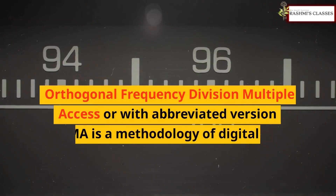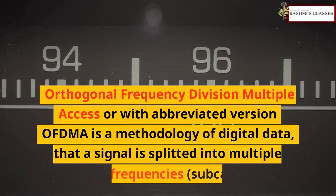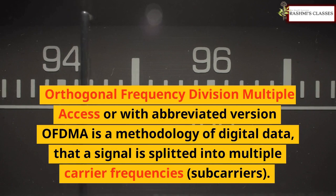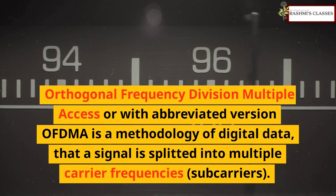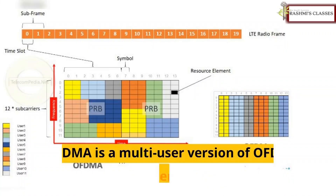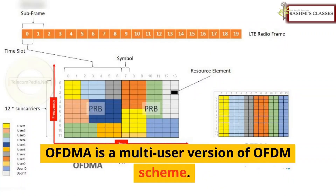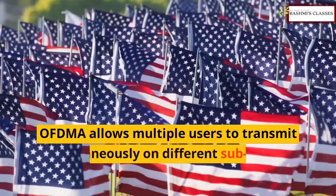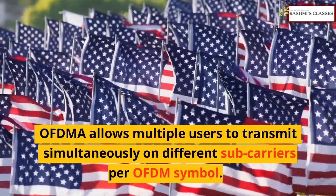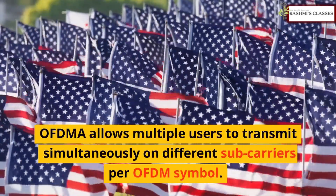Orthogonal Frequency Division Multiple Access, or OFDMA, is a methodology of digital data transmission where a signal is split into multiple carrier frequencies called subcarriers. OFDMA is a multi-user version of the OFDM scheme, and it allows multiple users to transmit simultaneously on different subcarriers per OFDM symbol.